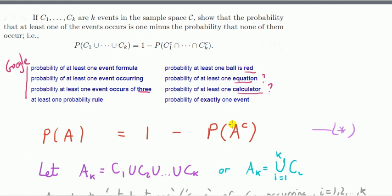So that's the probability of at least one event formula—I think I'm going to call this video that. And now that you've got that, maybe you can go ahead and solve the problem: at least one ball is red, or your equation, or at least one calculator, whatever that means.